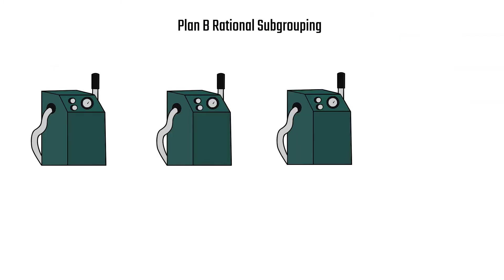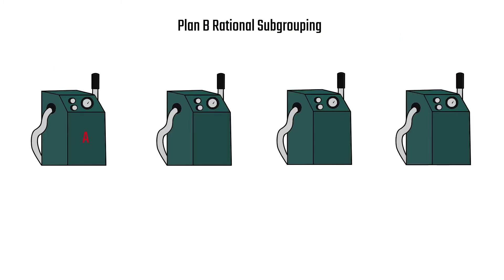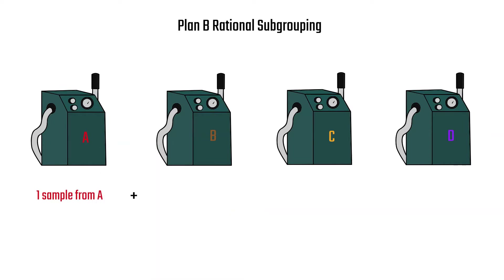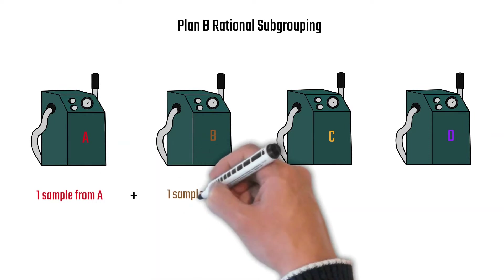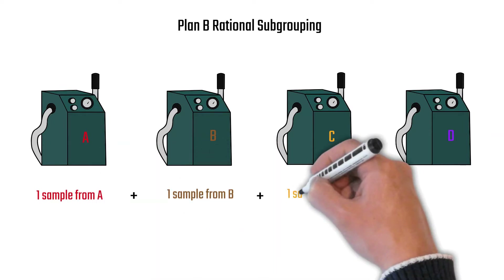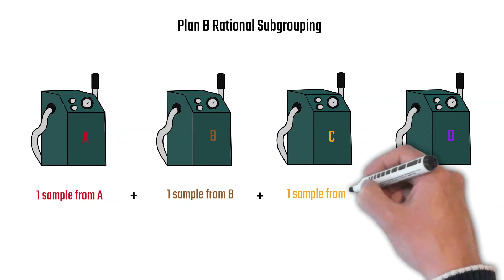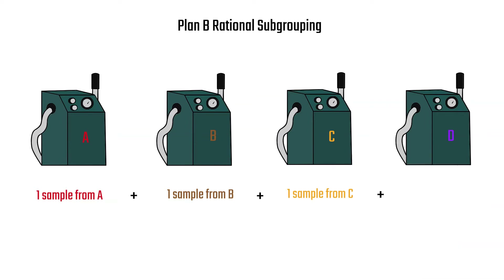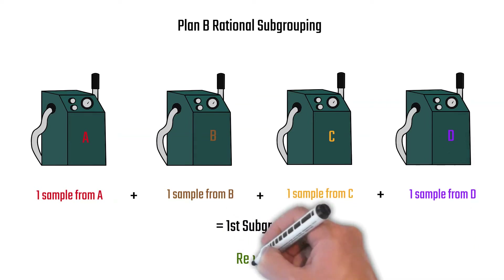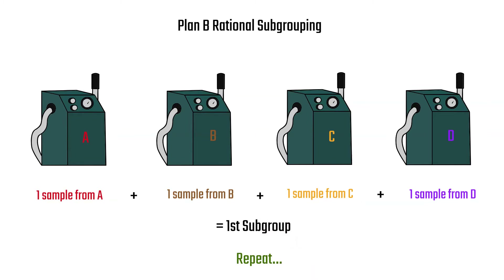With Plan B, we have our four machines, but now we're going to take one sample from machine A, one from B, one from machine C, and one from machine D, and repeat that process. So each subgroup in this plan has one part from each machine.